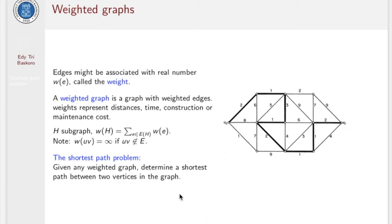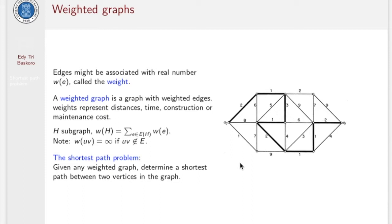For a subgraph edge, we define the weight of a subgraph edge as the sum of all weights of edges in the subgraph edge. Note that if u and v is not an edge, then the weight of uv is infinity. Now we state the shortest path problem: given any weighted graph, we would like to determine the shortest path between two given vertices in the graph. Here we have a weighted graph with all integer weights.